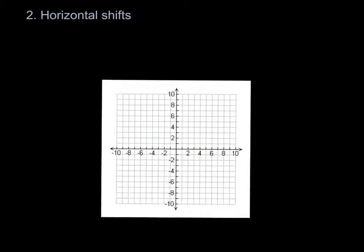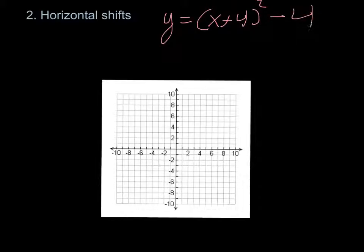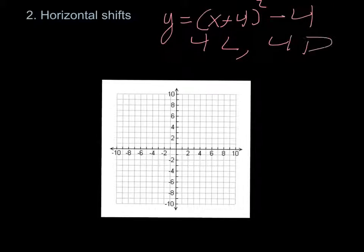Now let's combine both shifts. An example would be y equals (x+4) squared minus 4. The positive 4 inside the parentheses means 4 units to the left, and the negative 4 outside means 4 units down. So the vertex is now at negative 4, negative 4 — it's a standard parabola with the origin shifted there.